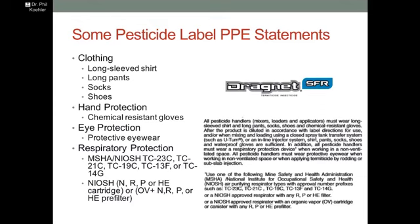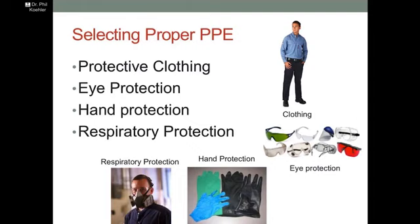All of that I found to be very confusing when I started comparing labels. What is really needed for personal protection? You have to abide by the requirements, but each one is slightly different in what they're requiring. So the outline for this talk is to discuss protective clothing first, then eye protection, then hand protection, and then respiratory protection from the standpoint of how to select the correct equipment.